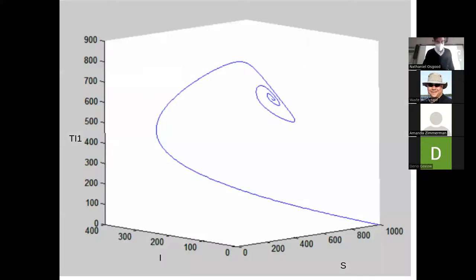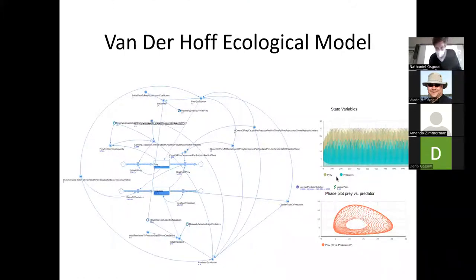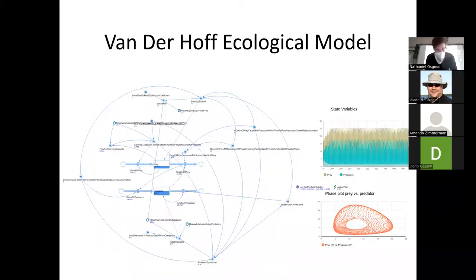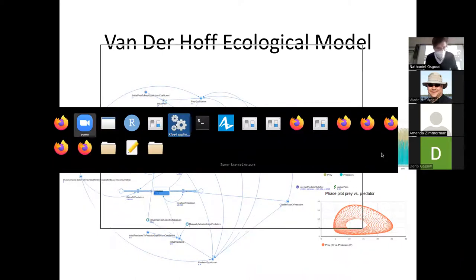When dealing with a model, we're used to dealing with behavior over time. We might have prey oscillating here and predators oscillating over time — this is what we're used to dealing with from models. Let's call up one of those models and we'll see one of those graphs. We can go get it, so let's switch over to the course site.